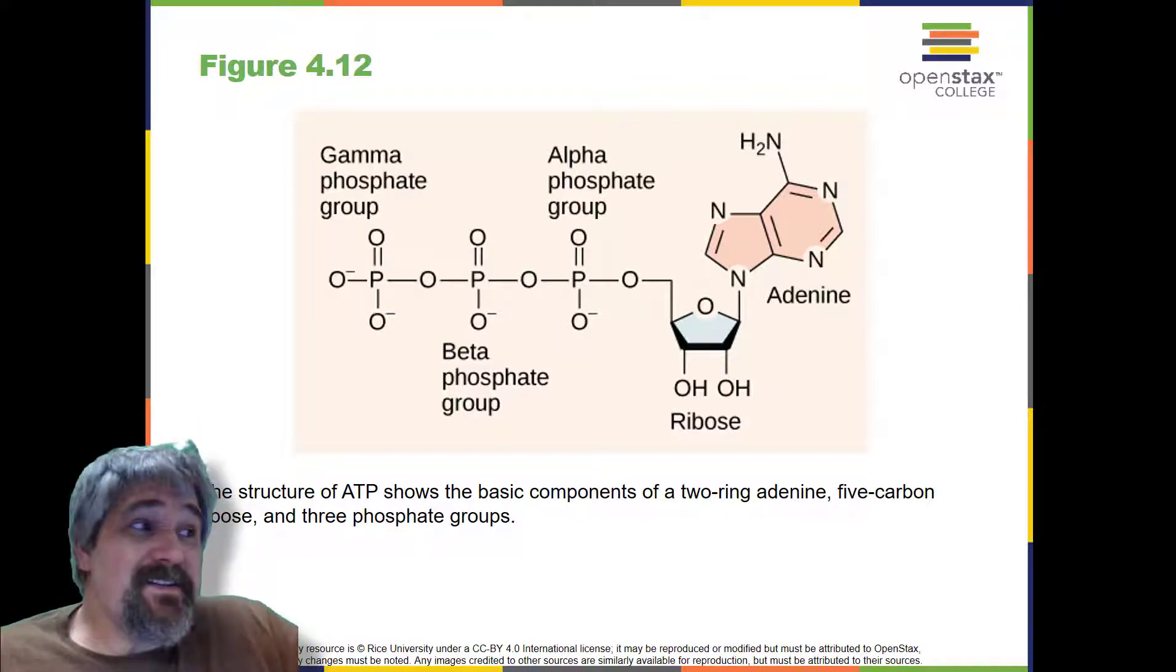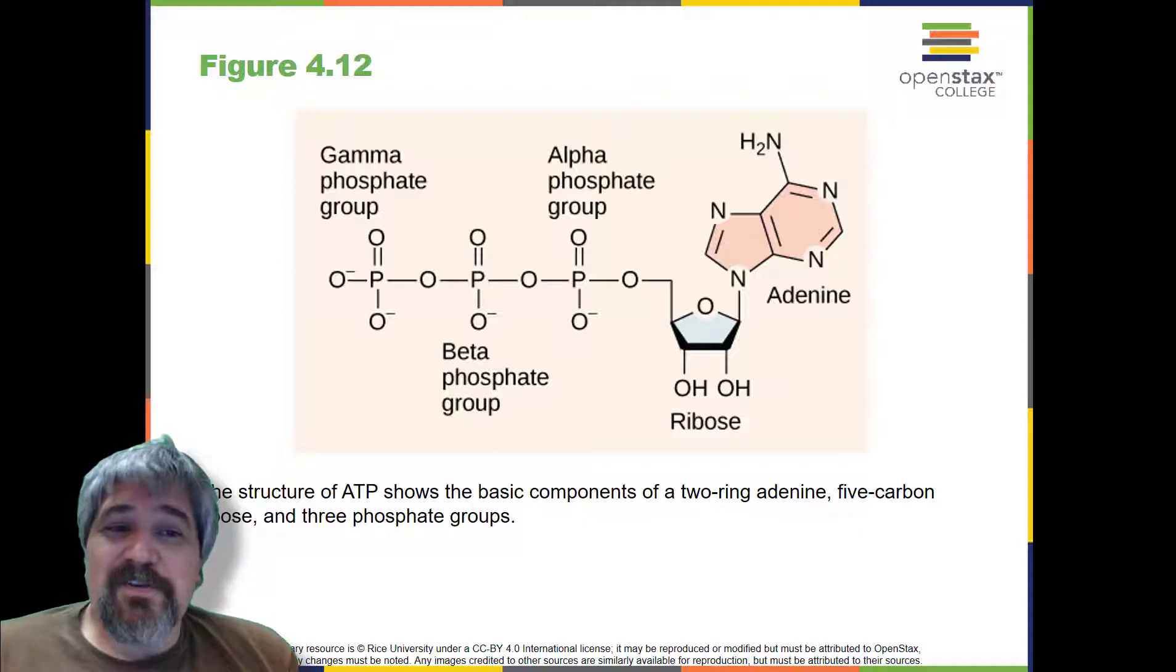A living cell cannot store significant amounts of free energy. Excess free energy would result in an increase of heat in the cell which would denature enzymes and other proteins and thus destroy the cell. Rather, a cell must be able to store energy safely and release it for use only as needed. Living cells accomplish this using ATP, which can be used to fill any energy need of the cell.